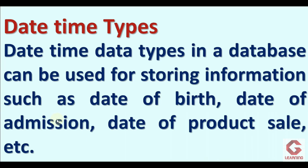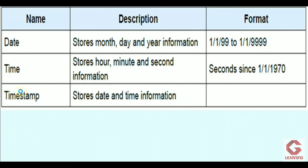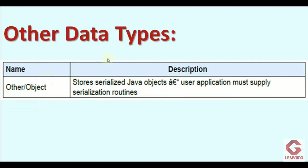Next is date/time types. Date/time data types are used for storing information such as date of birth, date of admission, date of product sale, etc. Whenever a column will contain a date or time value, we use date/time data type — for example, the DOB column uses date/time. The three date/time data types are: Date, Time, and Timestamp. Finally, if something doesn't fit any of the above categories, we use other data types. This concludes the first part of Session 2; the next part will continue in the next video.